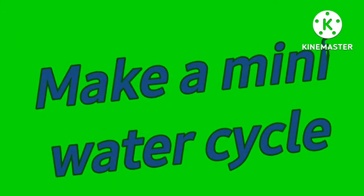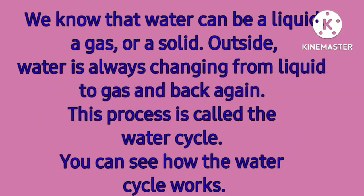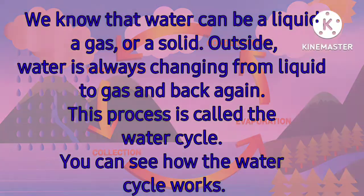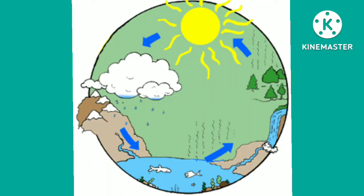Let's make a mini water cycle. We know that water can be a liquid, a gas, or a solid. Outside, water is always changing from liquid to gas and back again. This process is called the water cycle. You can see how the water cycle works — the Sun's heat causes water to evaporate from streams, lakes, rivers, and oceans.